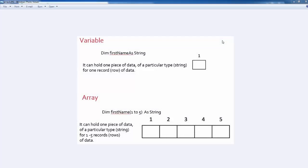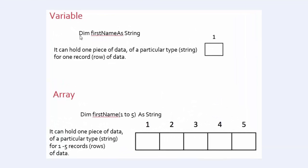We're going to take a look at arrays now. Arrays are just a way to hold multiple instances of the same data. If we looked at variables, we declared this variable 'first name' as a string and it can only hold one thing. So if we want to hold two things, we have to repopulate that variable, and moving down rows in our worksheet, we'd repopulate it each loop. So it can only hold one thing at a time.